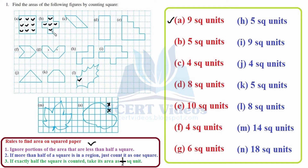For part C, we can see half, half, half, half — each pair of halves makes one. So we get one, two, three, four — therefore the area is 4 square units.